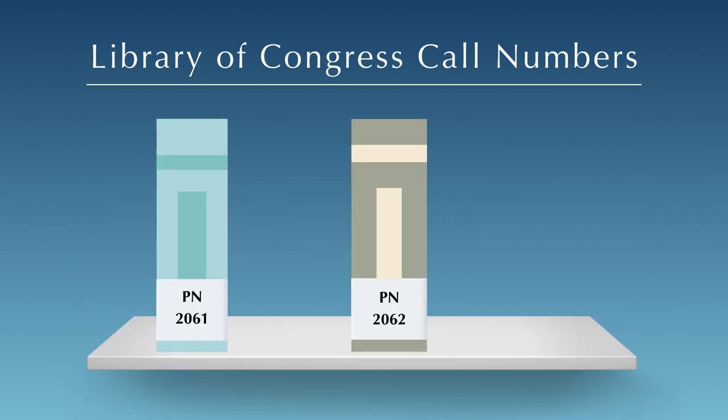Next, look for the section of the shelf with the corresponding numbers. The numbers, including decimals, progress in ascending order.